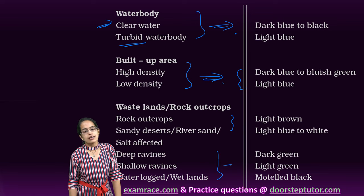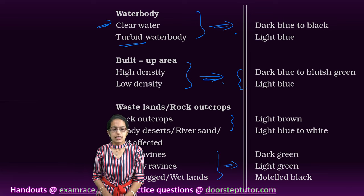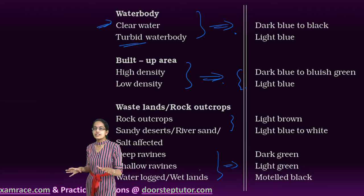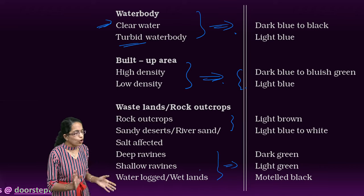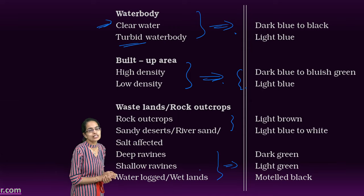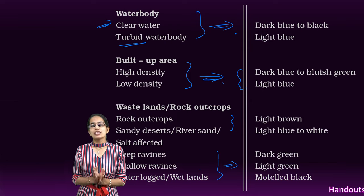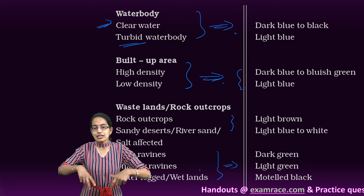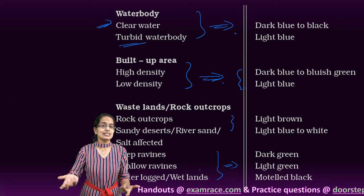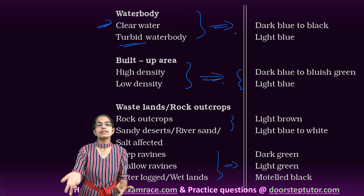the outcrop areas would be in the shades of brown and white. If there are ravines, they would be in the shades of greens. And finally, the waterlogged areas or the wetlands would be in the shades of black. Those are some of the common shades that we see in a false color composite imagery. This was about understanding the image. How do we actually interpret an image and what are the things that we keep in back of mind while interpreting an image?